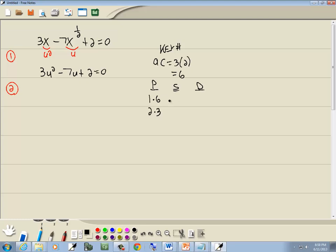And the sum column, we'll add those together. 1 plus 6 is 7, 2 plus 3 is 5. The difference column, we'll subtract them. 6 minus 1 is 5, 3 minus 2 is 1.